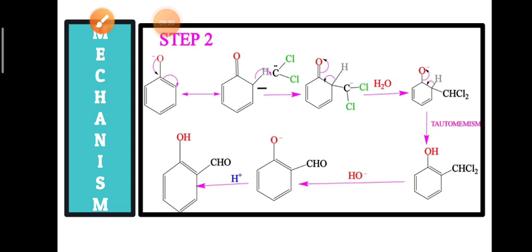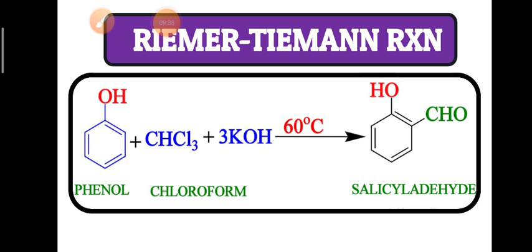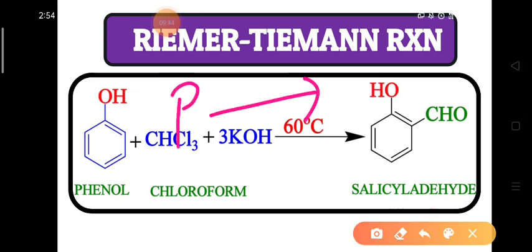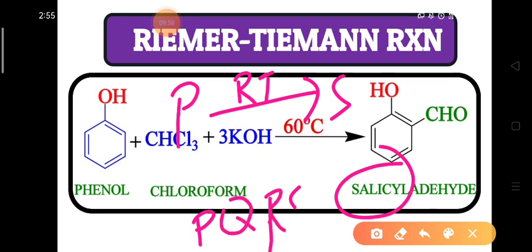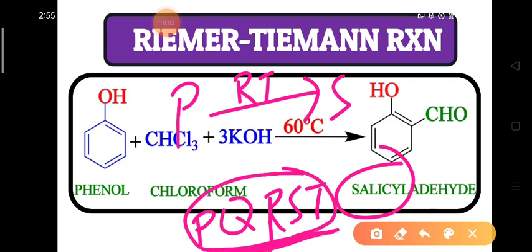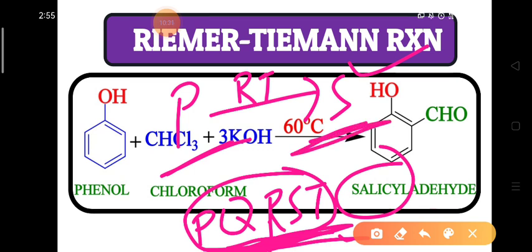The Reimer-Tiemann reaction can be simply remembered as follows: the starting substance is phenol and the end product is salicylaldehyde. We can write it as R and T. In English alphabets, PQRST come in order — phenol and salicylaldehyde follow a similar pattern, which is why this reaction is known as the Reimer-Tiemann reaction.